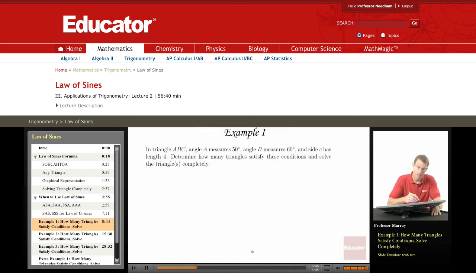First example, we're given an angle, another angle, and a side. So the first thing we need to do is draw a picture of this triangle and then see where we can go from there.